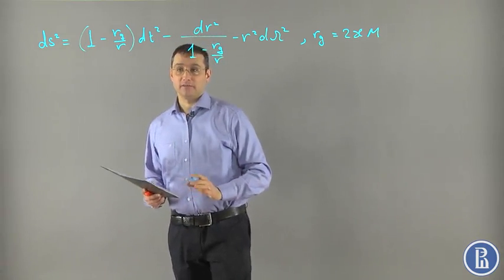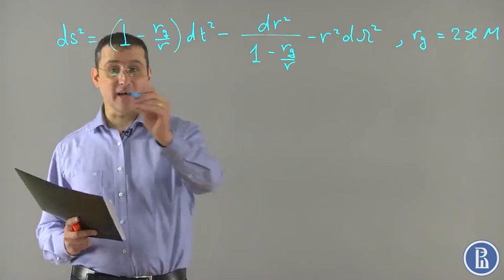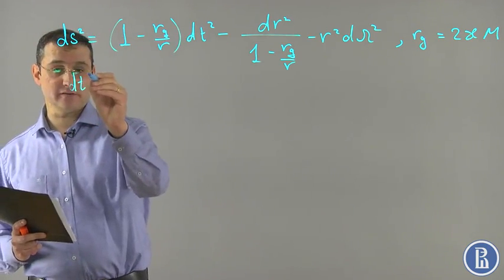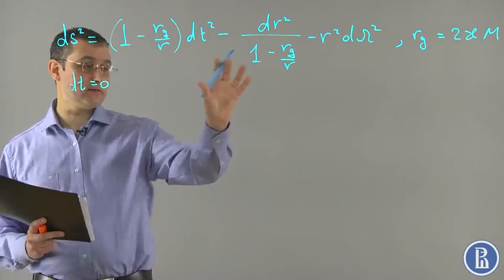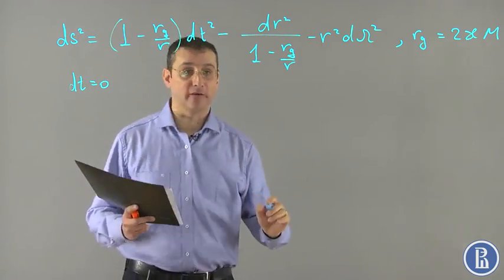And so, this metric is static. If we consider time slices of this metric, time slices are sliced as onions, as spheres. The spheres have the following radii.